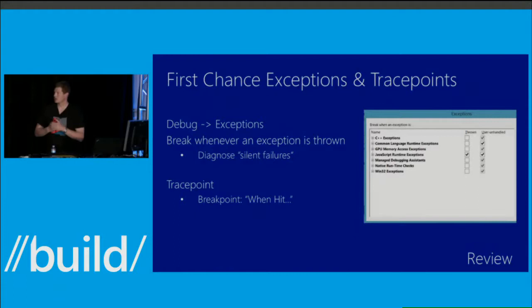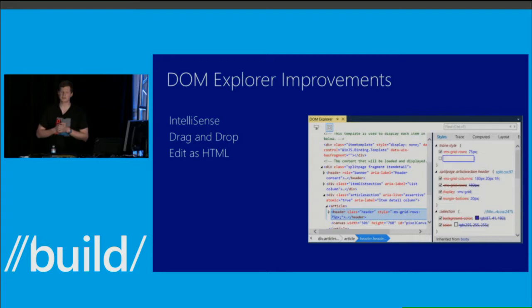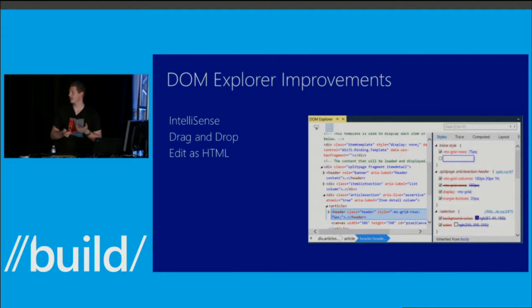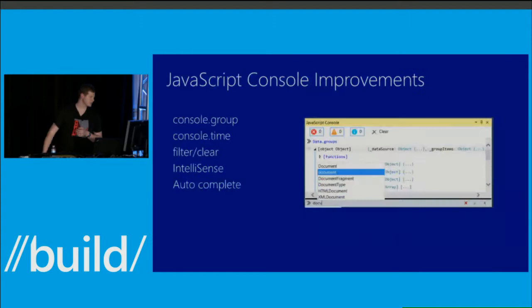So we just talked about first chance exceptions and trace points. The DOM Explorer has a whole list of improvements — a couple highlights: IntelliSense now for CSS properties, which is pretty nice instead of trying to remember all the CSS properties. Drag and drop if you want to rearrange things and see what it would look like. If you change your HTML, you can just drag and drop. And you can edit things as HTML in the DOM Explorer window now.